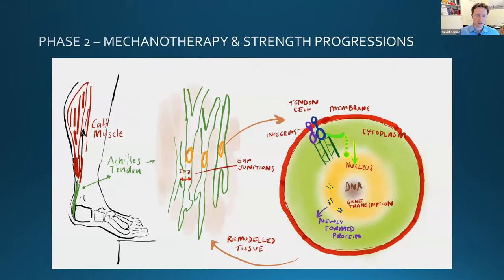In most cases the goal is just to protect and allow some early loading as tolerated unless there's a fracture. Generally once a patient can perform their activities of daily living with reasonable range of motion, we can progress to phase two. In phase two, the goal is deliberate overload — just as you would do trying to strengthen an uninjured patient — to achieve specific adaptation of the injured tissues. This is termed mechanotransduction, and the same process happens in tendons, bones, and muscles. If we deliberately overload them, they respond to the direction and magnitude of that load.